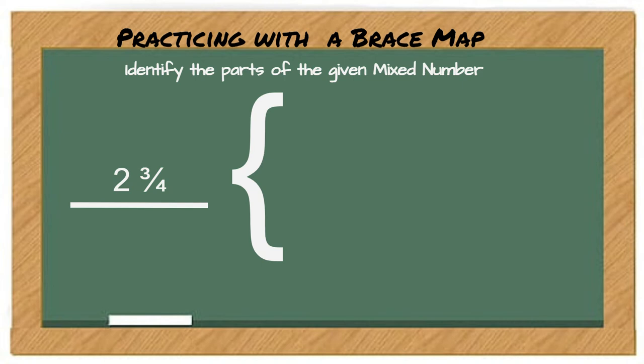You can see that we've got two wholes and three fourths. So, hopefully, on your whiteboard or on your paper, you've drawn the parts of the mixed number. Hopefully, you have two whole shapes and one shape with three out of the four segments colored. Excellent. Well done.